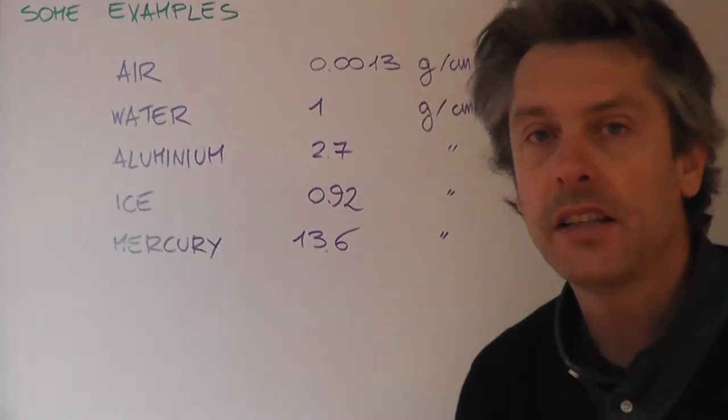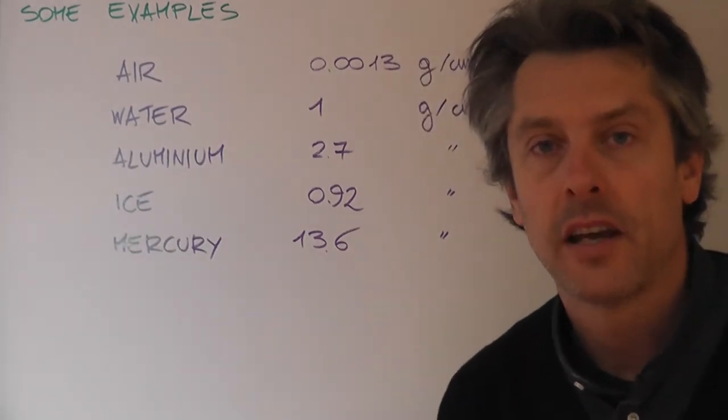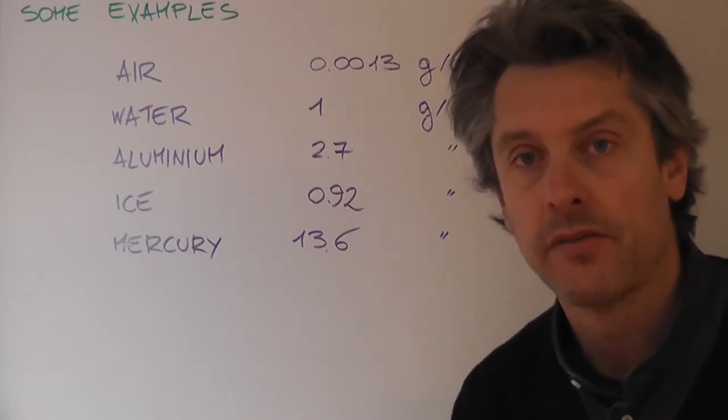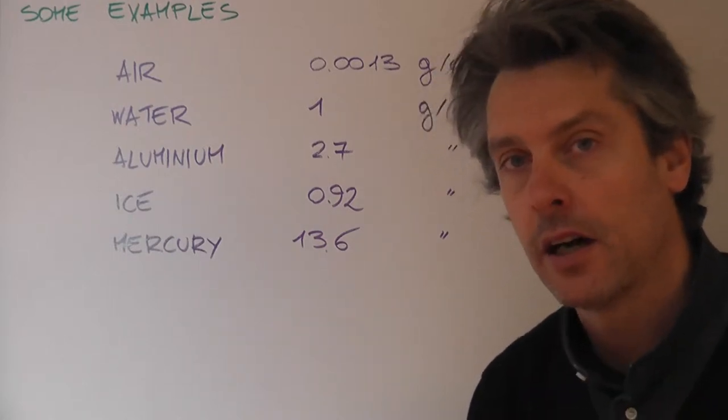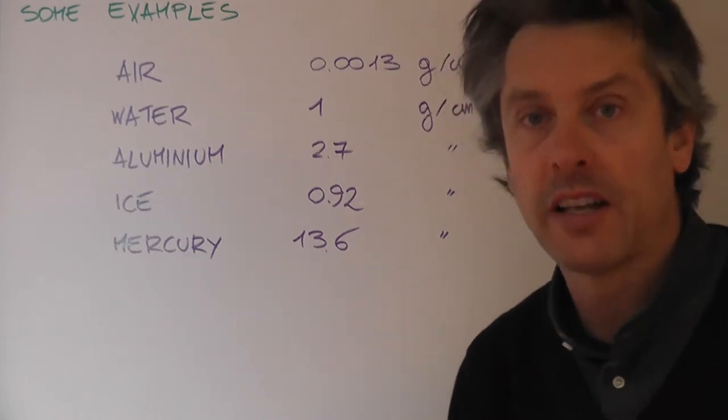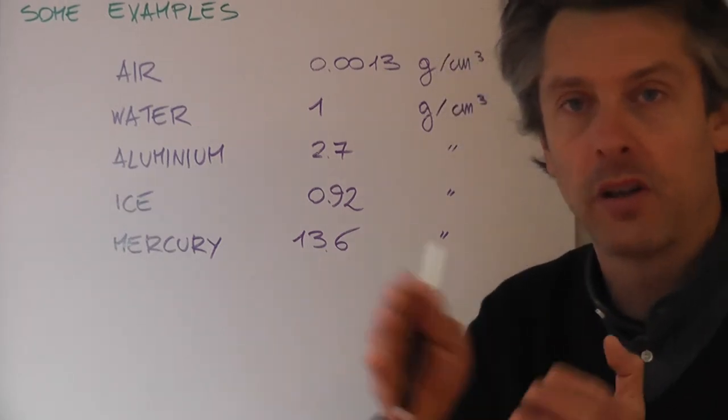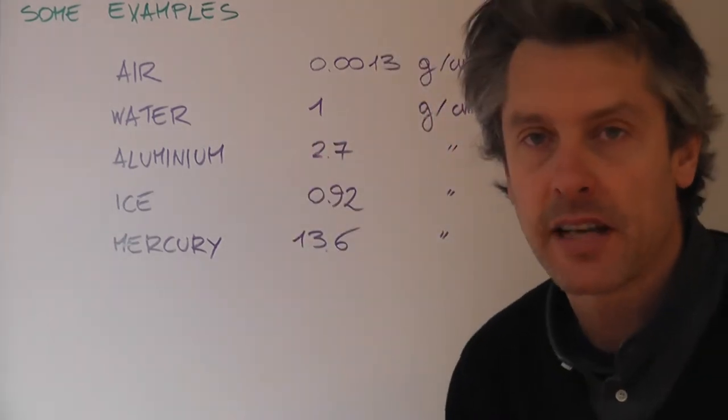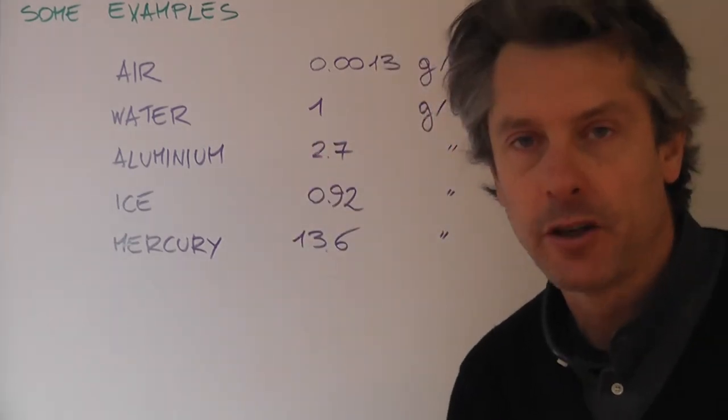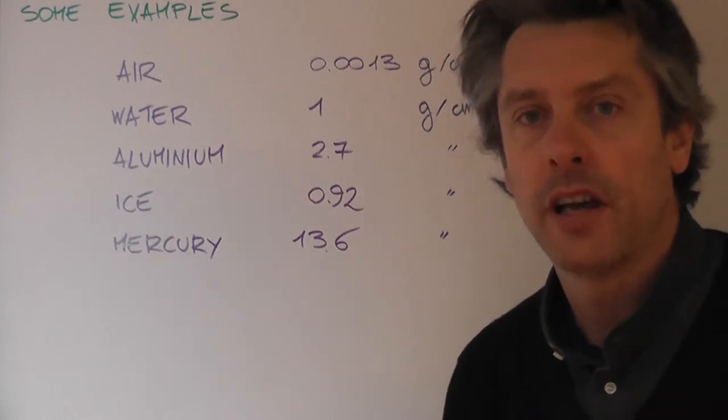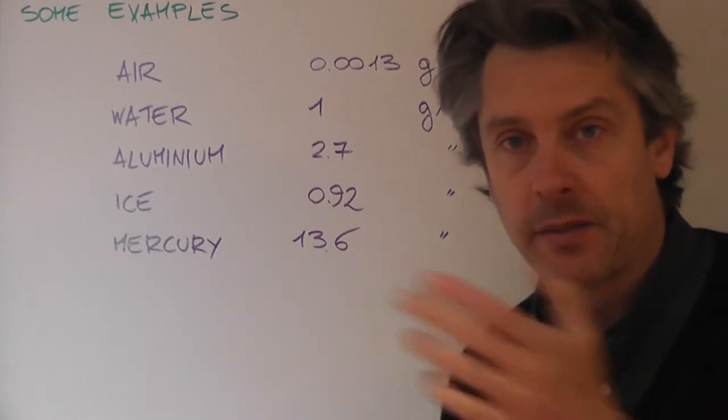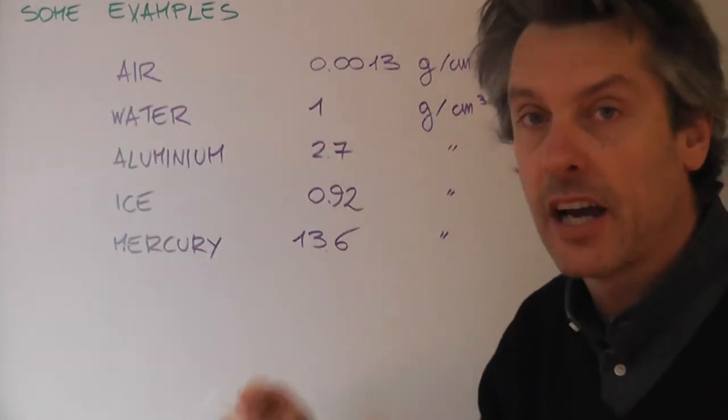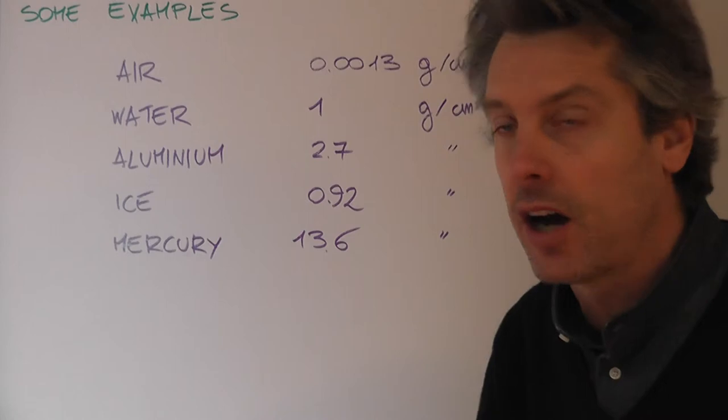Finding the density of an object is a good way to identify the substance or material that object is made of, assuming that object is made of only one material. Here we have a few examples of density. In your textbook you'll find more. This is just to give you an idea on how big densities are.